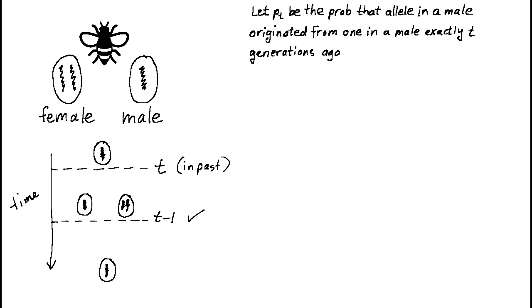I know it seems weird, but hear me out. If we've solved the problem for t minus 1, then we know that the probability that the allele currently found in a male originated from one currently found in a male t minus 1 generations ago is equal to p sub t minus 1. That's by definition.